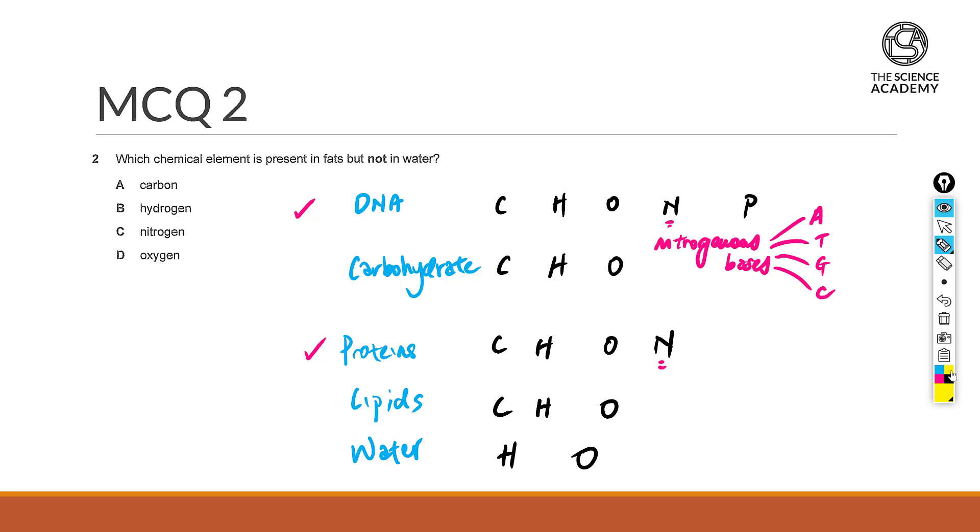Now we can tell that the odd one element that is actually found in lipids and not in your water will actually be the element known as carbon. So this is a relatively simple and straightforward question. The answer for this question here will be A for carbon.